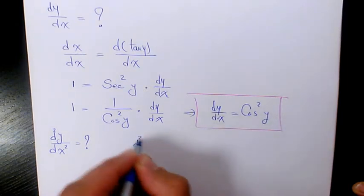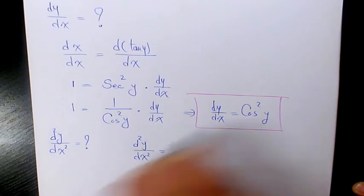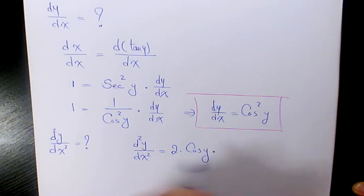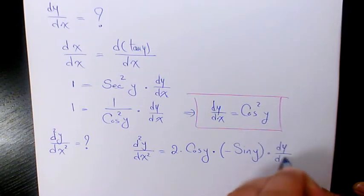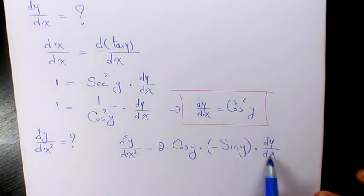It is going to be d squared y over dx squared equals 2 times cosine y times negative sine y times dy over dx. And we have dy over dx already, which is cosine squared y.